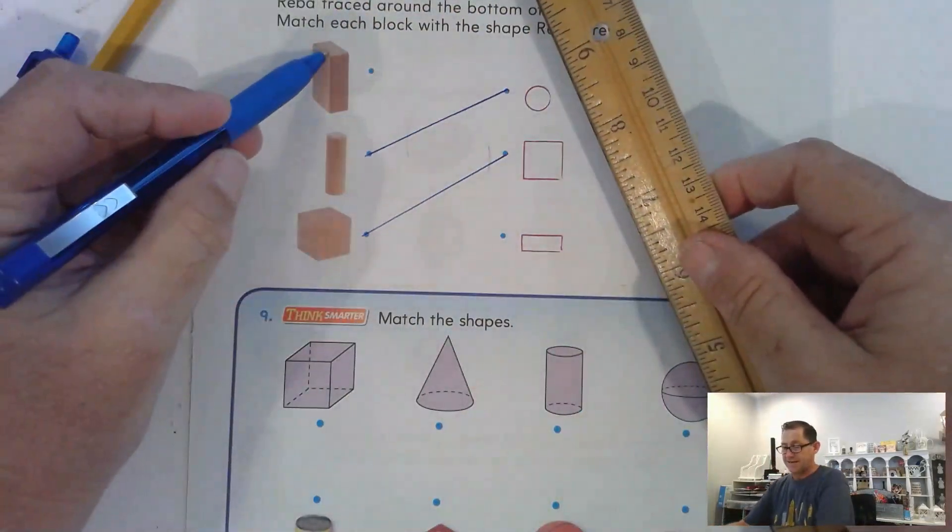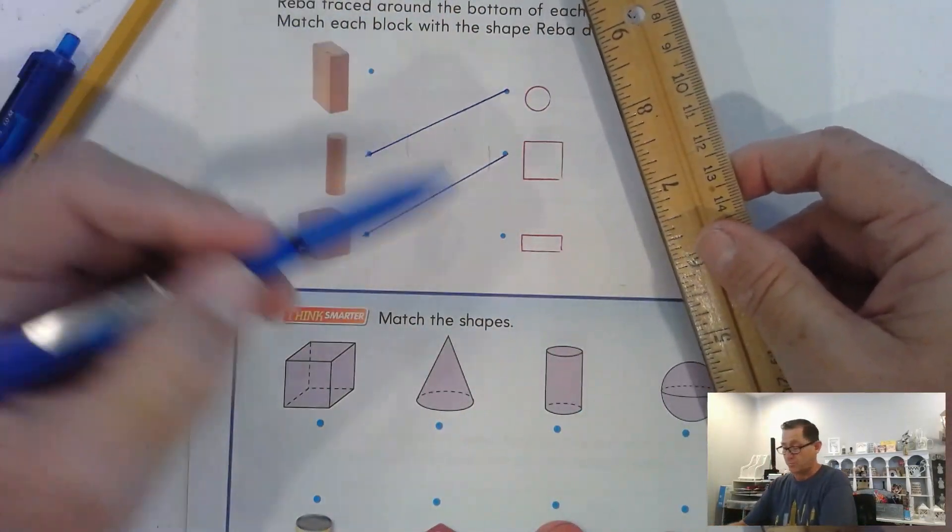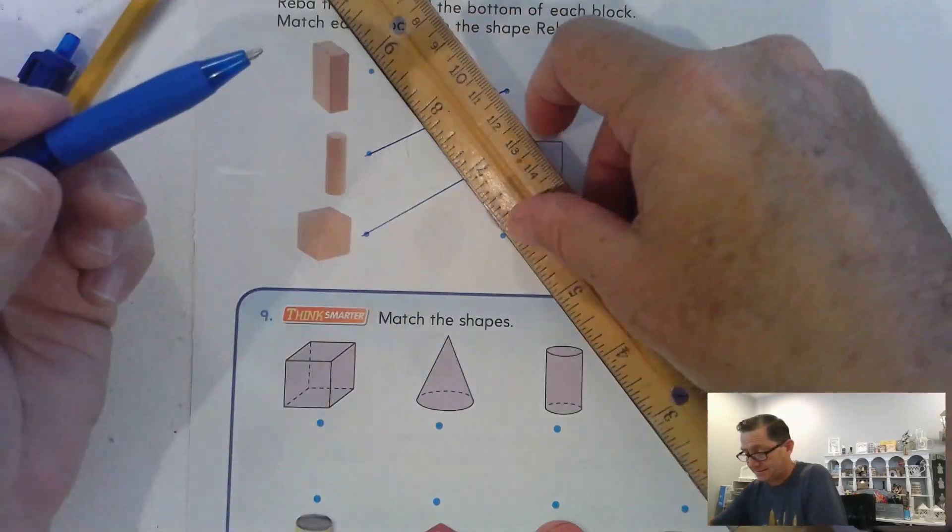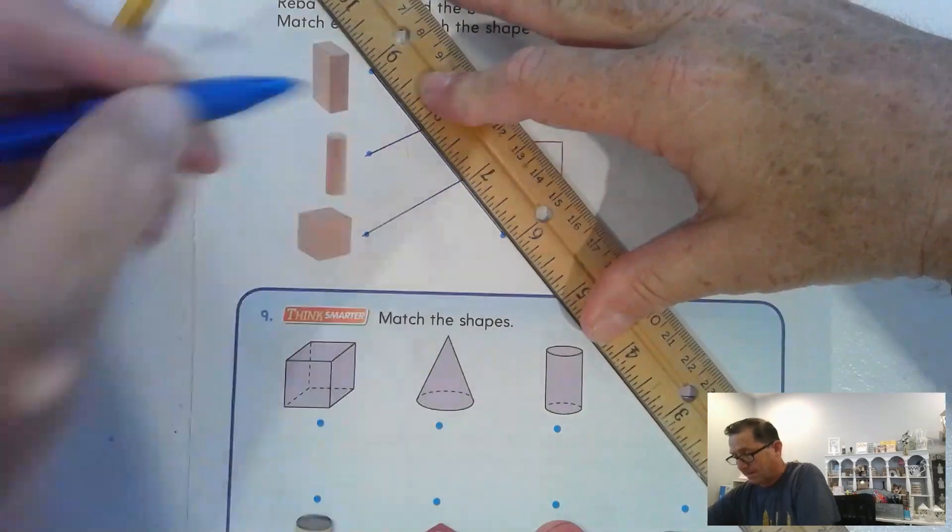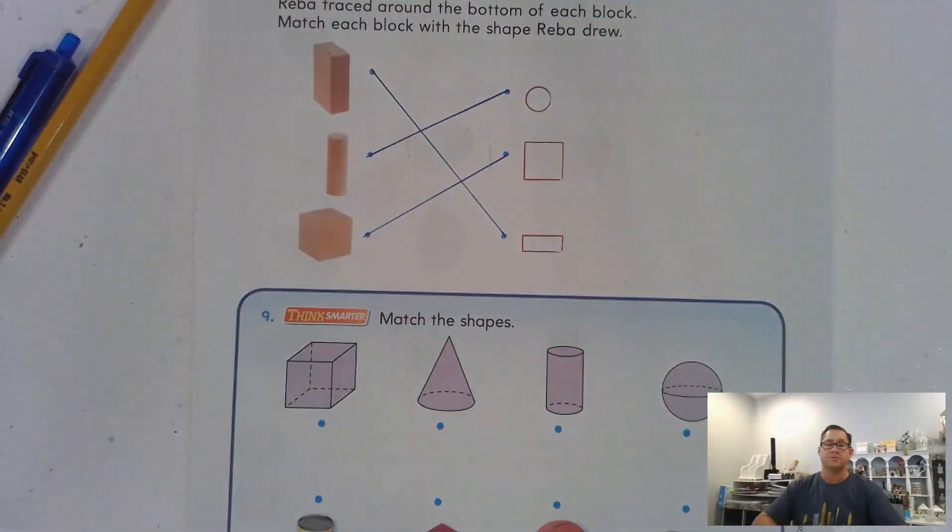And so, this rectangular prism, the reason it's called a rectangle, is it has a rectangular face. It looks like that.